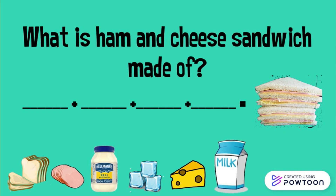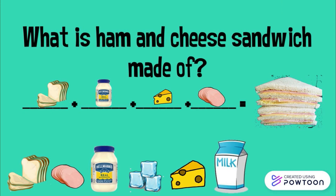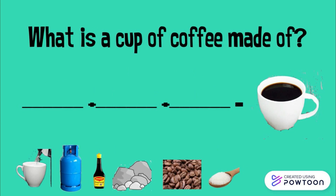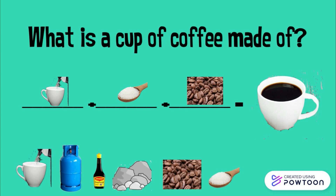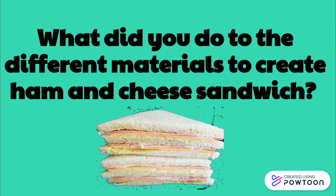Let's have an activity. What is a ham and cheese sandwich made of? Ham and cheese sandwich is made of bread, mayonnaise, cheese, and ham. What is a cup of coffee made of? A cup of coffee is made of water, sugar, and coffee.